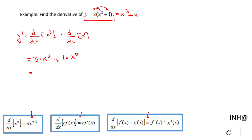The final form here will be 3x squared plus 1. X to the 0 is 1, so 1 times 1 is 1, and this is the derivative of y.